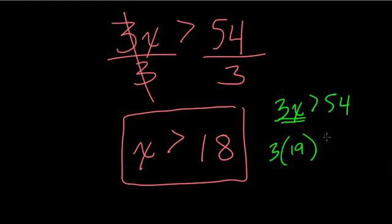3 times 19, is that greater than 54? Well, yes, 3 times 19 is 57. And that is greater than 54. So I hope this helped.